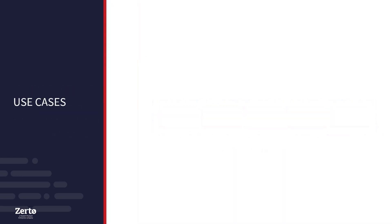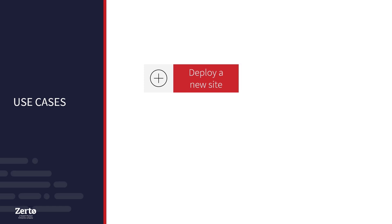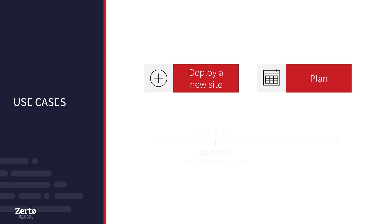When considering your adoption of the ZVM appliance, the top two use cases are using the ZVM appliance for all new Zerto deployments on VMware vSphere, and planning and preparing for future large-scale adoption by learning and becoming familiar with the ZVMA. In Zerto 9.7, it is possible to pair Windows ZVMs to a new ZVMA to assist with testing a ZVMA right alongside your existing deployments.